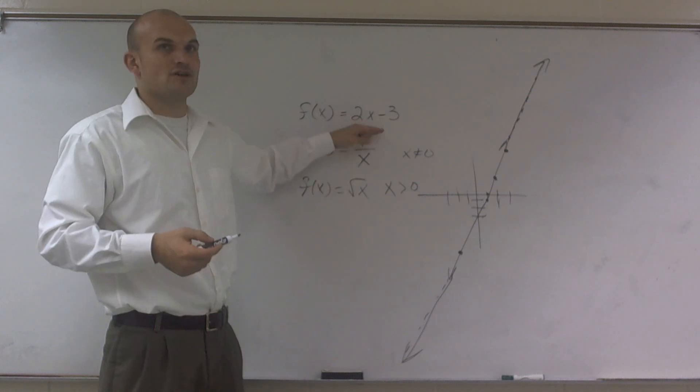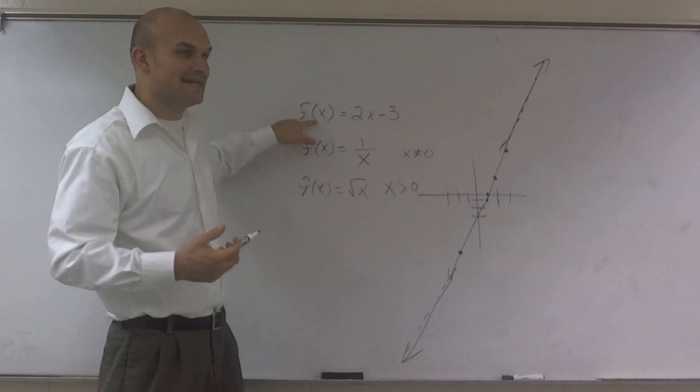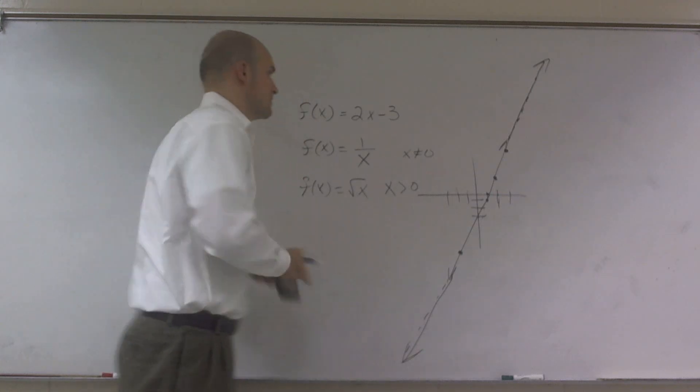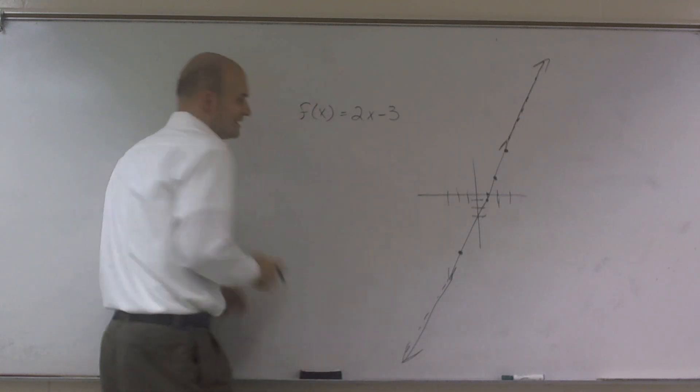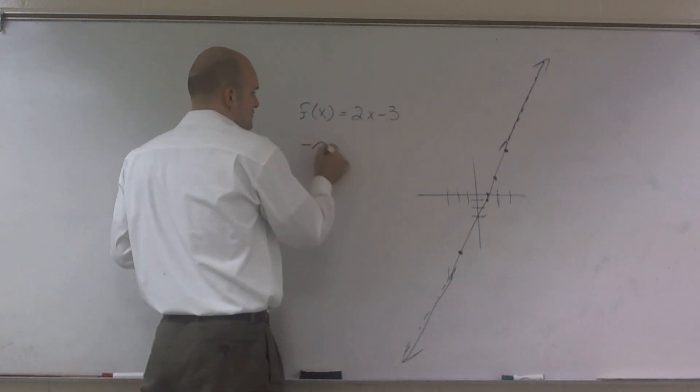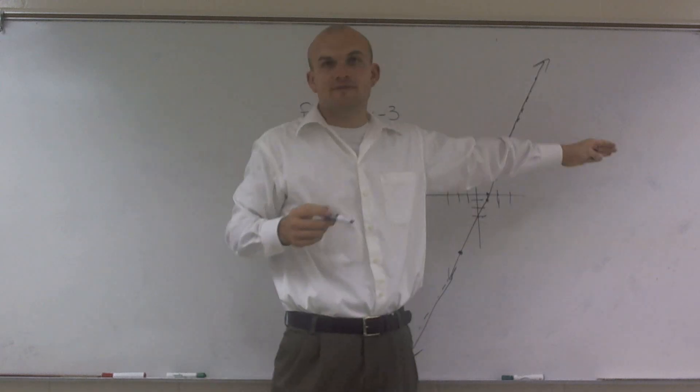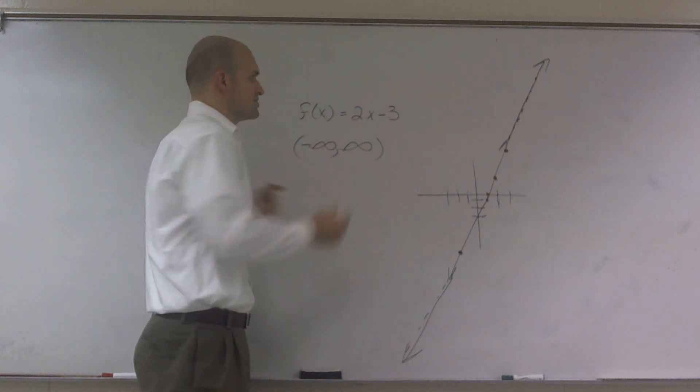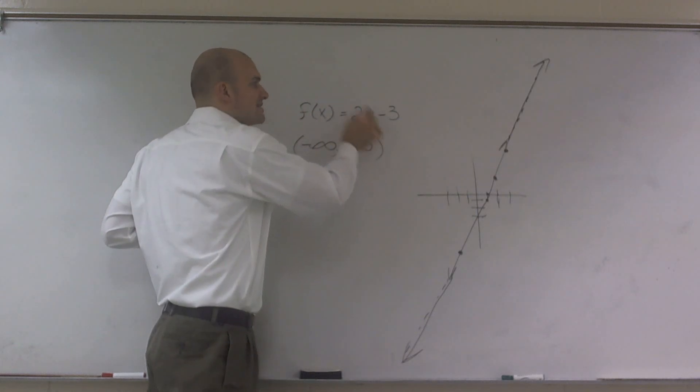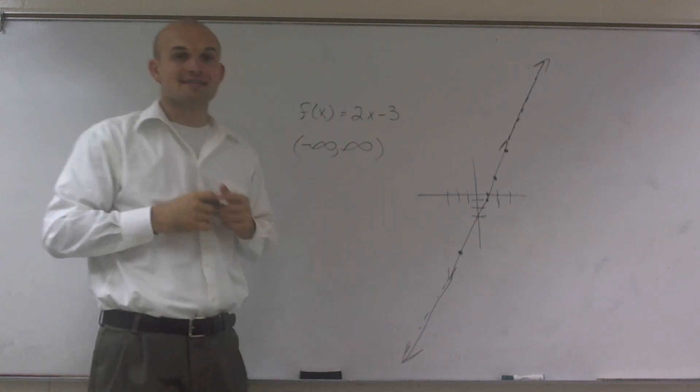For this linear function, we have no restrictions. Every number that I plug in for x, I get an output value. So therefore, what we can say is, the domain is all the real numbers. All real numbers value for x. So you could say it goes from negative infinity to infinity, meaning all x values, negative infinity to all the positive x values, to infinity, are going to be a part of our range. No matter what number I plug in for x, I will get an output. Therefore, it is all real numbers is the domain.